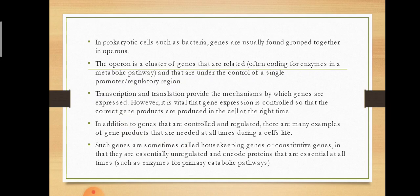Genes for products that are required at all times, such as enzymes of central metabolic pathways, are expressed at more or less constant levels in virtually all cells of the species or organism, and these are often referred to as housekeeping genes. They are constantly working in the cell. Unvarying expression of a gene is called constitutive gene expression.